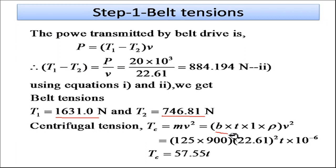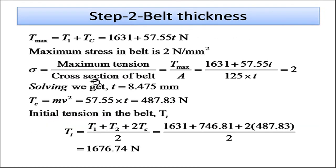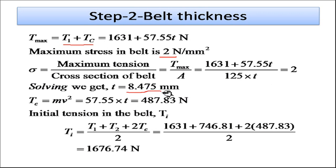The centrifugal tension Tc = mV² = (width × thickness × length × density) × V². Per unit length and width, this gives Tc = 57.55t, where t is the unknown belt thickness. The maximum tension T_max = T1 + Tc = 1631 + 57.55t. Using stress = T_max / cross-section area: 2 = (1631 + 57.55t) / (125t). Solving gives t = 8.475 mm, rounded to 8.5 mm.